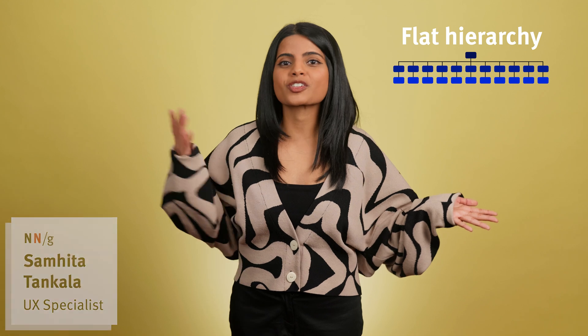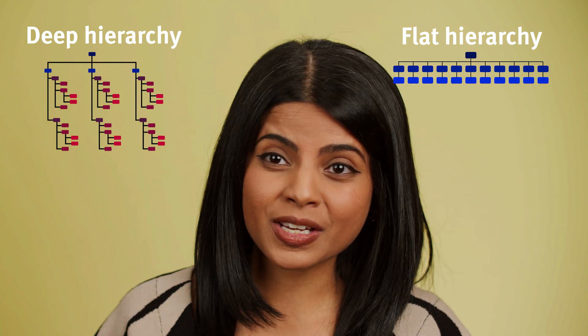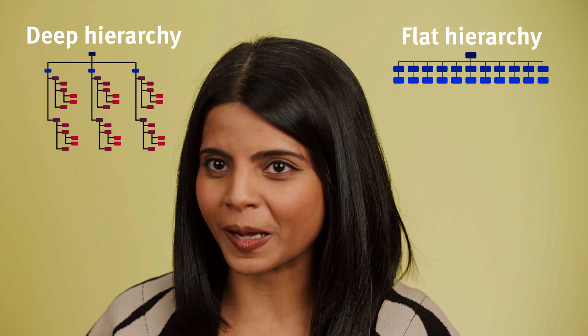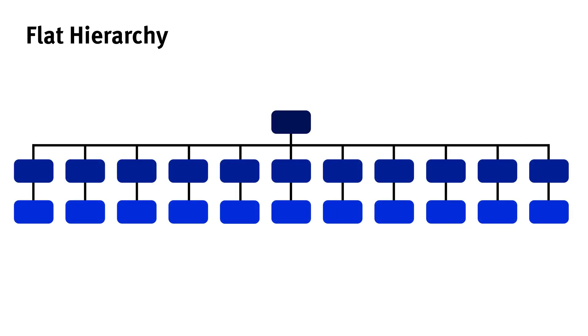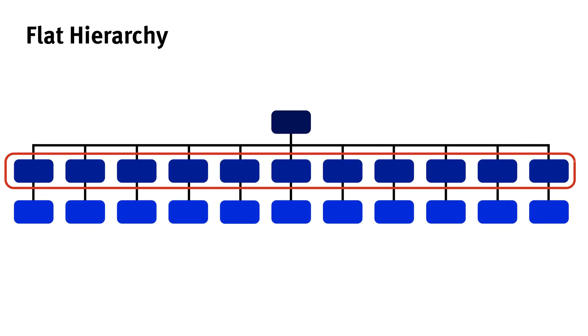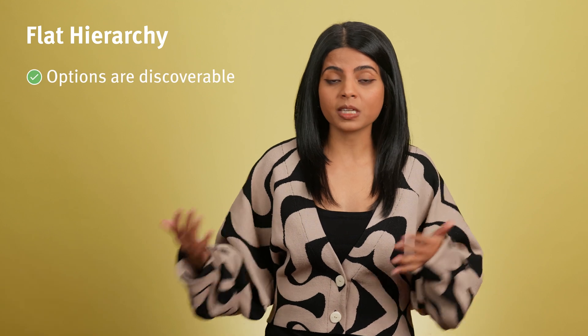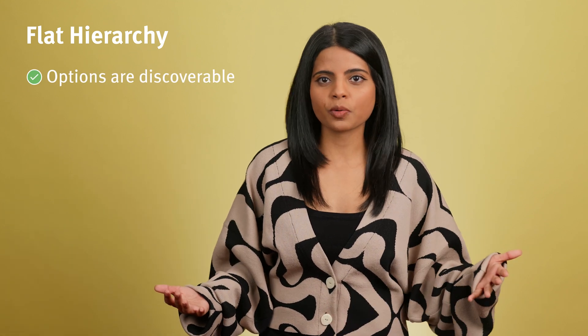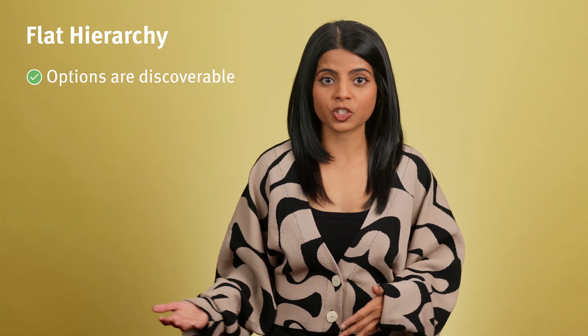Information architects often have to make the hard decision of pursuing a flat hierarchy versus a deep hierarchy — both have their positives and drawbacks. In a flat hierarchy structure, the top-tier navigation or top-level categories include a lot of options, making them immediately visible to users. This means there are fewer items to click into below, which makes the structure more flat. Flat hierarchies can be great because the options are immediately discoverable and users don't have to click through the navigation too much to find what they want.